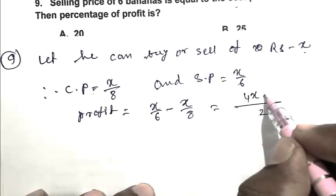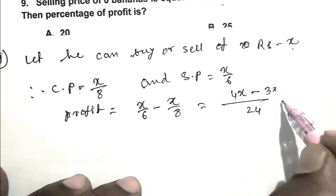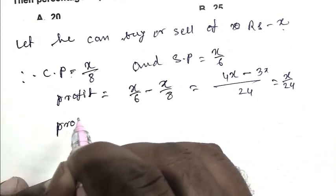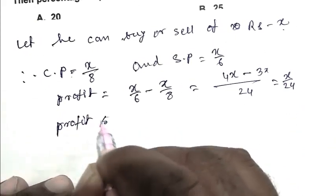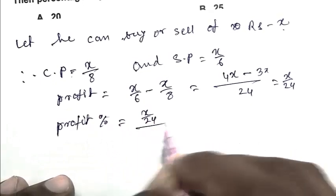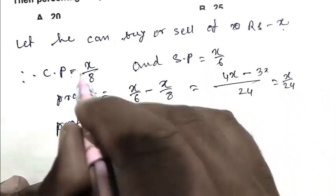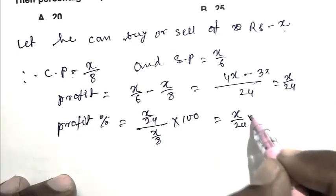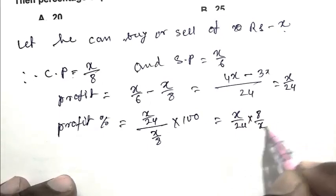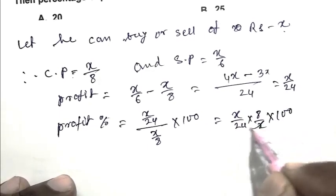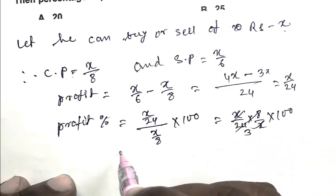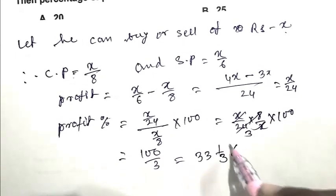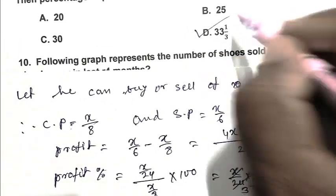That is (4X - 3X) upon 24, which equals X upon 24. So profit percentage equals (X upon 24) divided by CP (X upon 8) multiplied by 100, which equals 100 upon 3, or 33 and 1/3 percent. So D is the right answer.